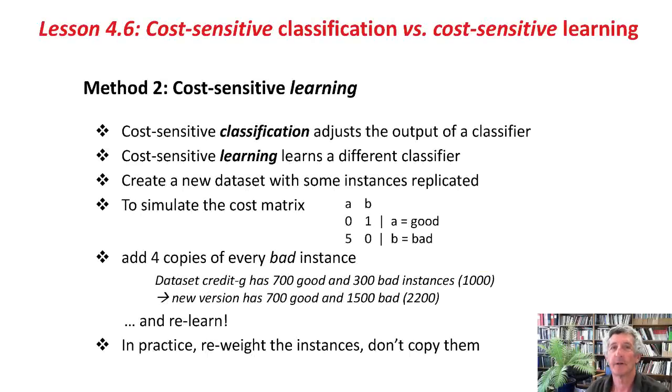Now the second method, that was what we're calling cost-sensitive classification, where you adjust the probability threshold. The second method we're going to call cost-sensitive learning, where instead of adjusting the output of the classifier, the probability threshold, we're going to learn a different classifier. Here's a way to think about that. Suppose that we created a new dataset by replicating some instances in the old dataset. To simulate the cost matrix we've been talking about, suppose that we added four copies of every bad instance. The new dataset would have 700 good instances and 1,500 bad instances, and re-learn, say, J48, and when you think about it, that will give errors on the bad instances effectively a weight of 5 to 1, more expensive than errors on the good instances.